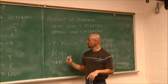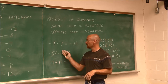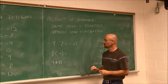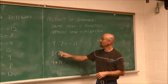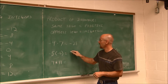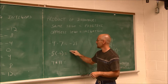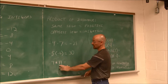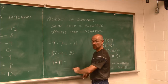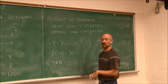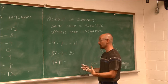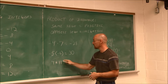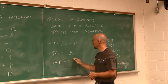Negative 5 times negative 6 — remember parentheses adjacent means multiplication. They have the same sign, so we're going to get a positive value. 5 times 6 is 30 — a positive 30. And 4 times 11: both of these are positive, same sign, so I get a positive — 4 times 11 is 44.